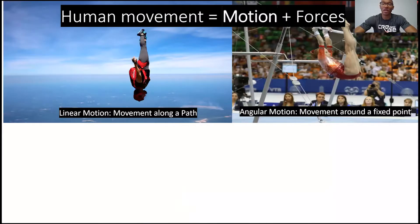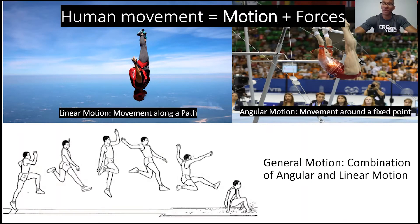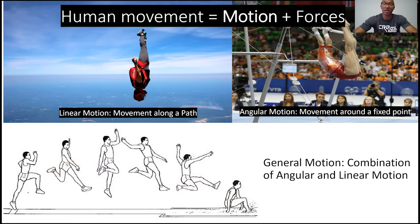Human movement is comprised of motion and forces. Motion can either be linear — which is movement along a particular path — or angular, which is movement around a fixed point. However, when we move it's often a combination of both. If you were to jump forwards, your body would follow a particular path as you flow through the air, but various parts of your body would actually be rotating in order to maintain your balance while airborne.